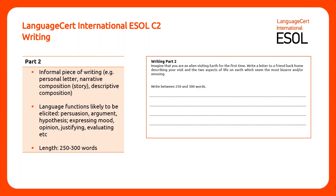Part two requires them to write an informal piece of writing such as a personal letter, a narrative composition, story or a descriptive composition. Language functions likely to be elicited include persuasion, argument, hypothesis, expressing mood, opinion, justifying, evaluating, etc. Candidates are required to write between 250 and 300 words.